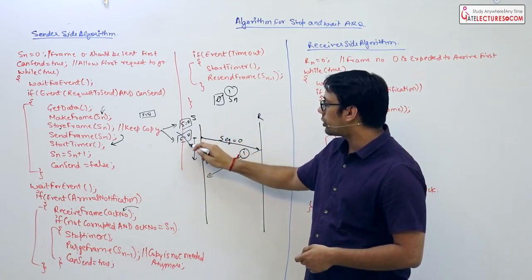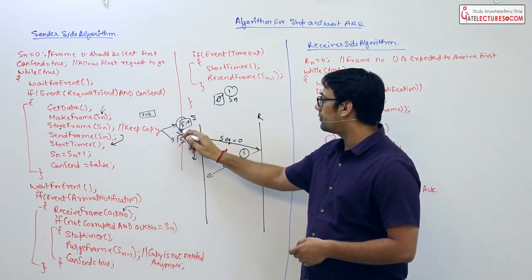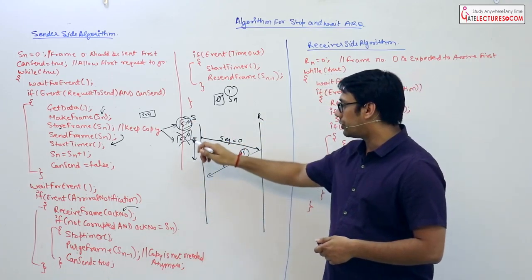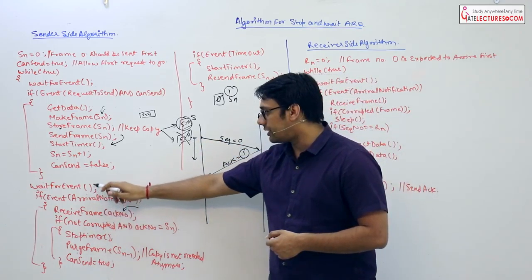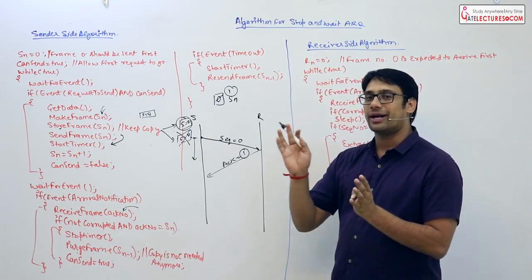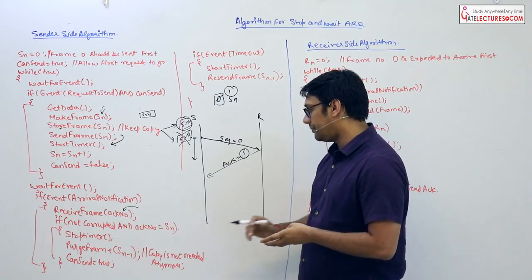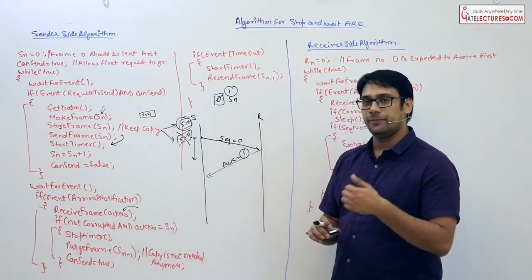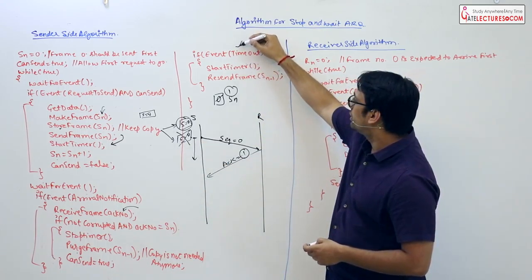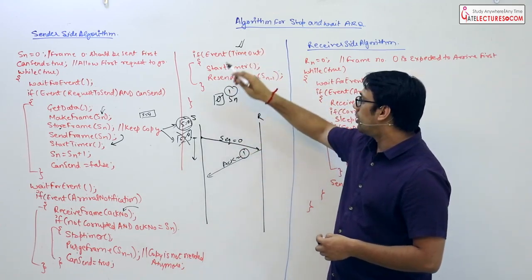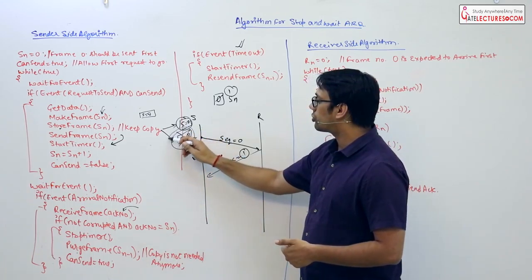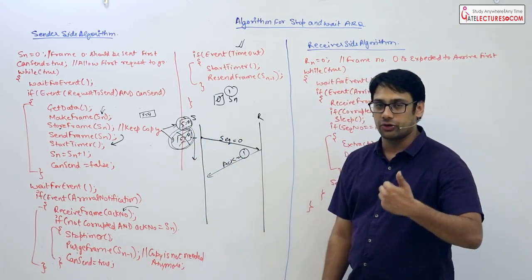Once the sequence number and acknowledgement number match, we perform a purge frame — we delete the stored copy of the data packet. Remember, one copy was already sent to the receiver and the second copy was stored. When the sender receives the acknowledgement confirming the packet was delivered perfectly, we delete that stored second copy.